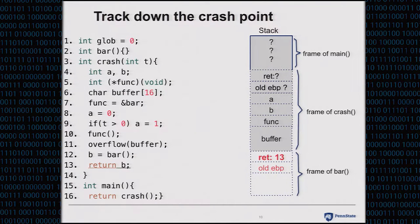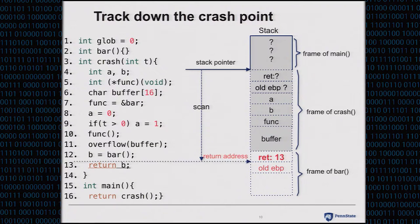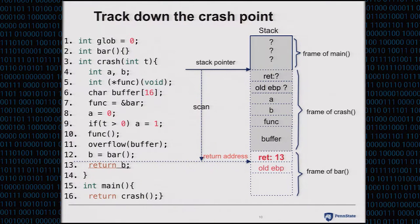Our approach consists of two steps. In the first step, we scan the stack and find the most recently returned functions — specifically, we scan the stack below the current stack pointer and try to find return addresses. For a found return address, we validate its legitimacy following two criteria: first, the instruction at the return address must be a legal instruction; second, the instruction at the return address must follow a call instruction.